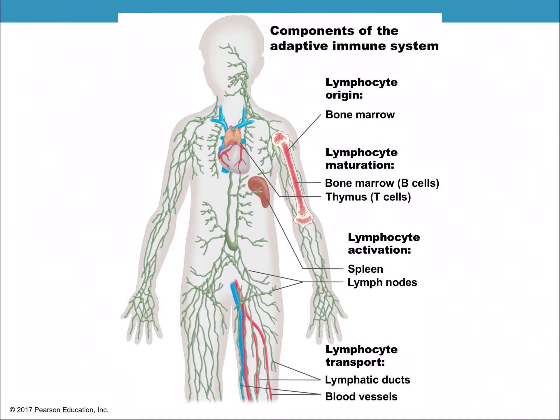Here are the components of the adaptive immune system. In green, you have all the lymph vessels. Here's the bone marrow — in an adult it's only in the epiphyses. Those cells are produced and move through the bloodstream, where T cells will mature in the thymus. The spleen is located here, and the lymph nodes are these bulging areas — places where these cells hang out until they're needed.